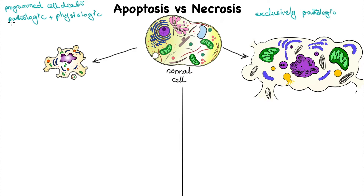Think of it in this way: apoptosis happens when the cell itself decides that it's faulty and wants to get rid of itself and suicides, while necrosis happens when the cell gets killed due to a pathologic condition.